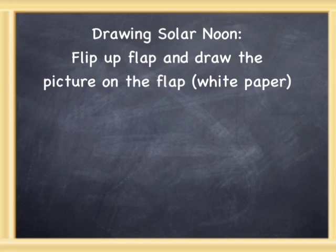Now we're going to draw a picture of solar noon. You're going to keep the flap flipped up and draw the picture on that flap, so you'll have the picture on the flap and the notes on the notebook paper underneath. The first thing you'll need is some grass.